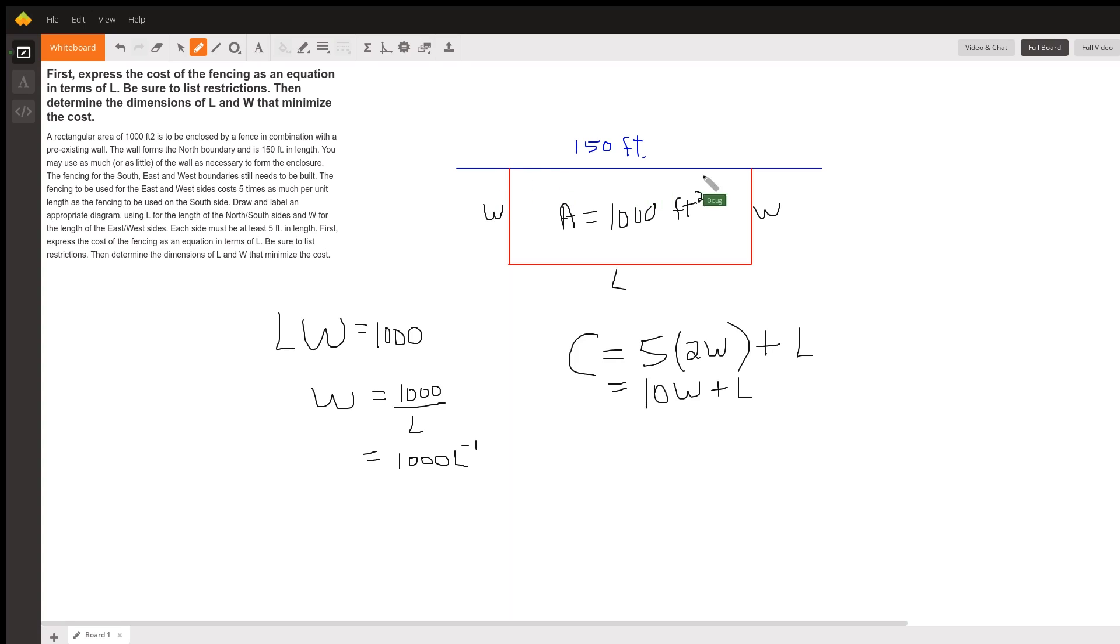And we're going to use the wall as one of the borders. And then we'll have two widths and a length. And we know that the cost of the W sides is five times the cost of the fencing that goes along the L side. So the cost function,